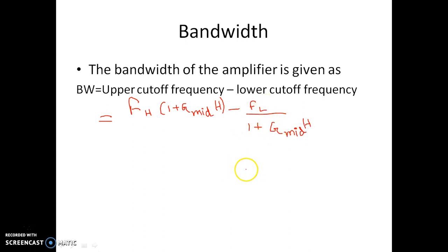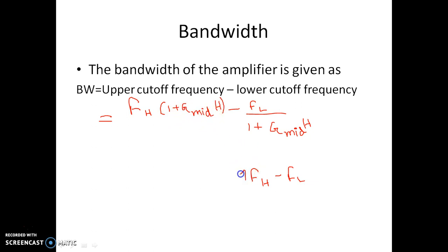Initially, bandwidth without application of negative feedback was FH minus FL. But now the bandwidth is FH × (1 + G_mid × H), meaning FH increases, and that is subtracted from FL / (1 + G_mid × H), meaning the lower cutoff frequency decreases.